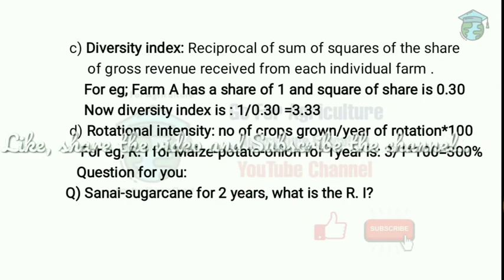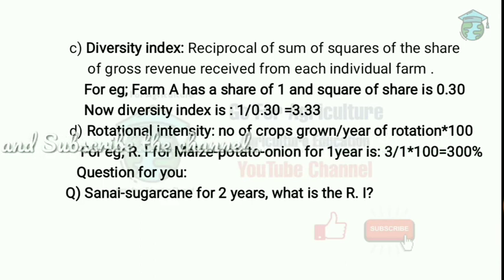The Diversity Index is the reciprocal of the sum of squares of the share of gross revenue received from each individual farm. For example, if Farm A has a share, the square of that share is 0.30. The formula is share divided by square of share, which gives you the Diversity Index.